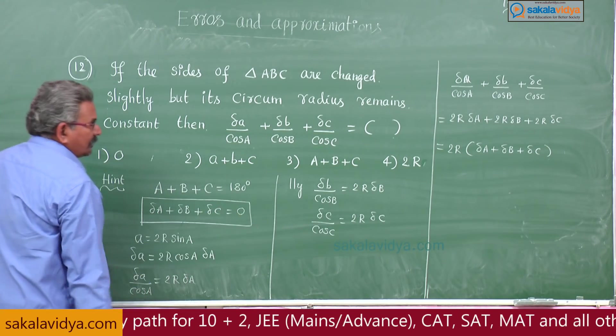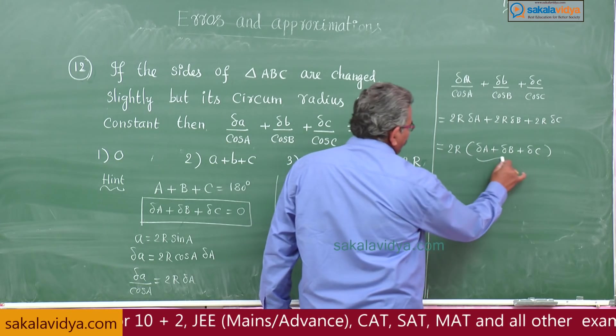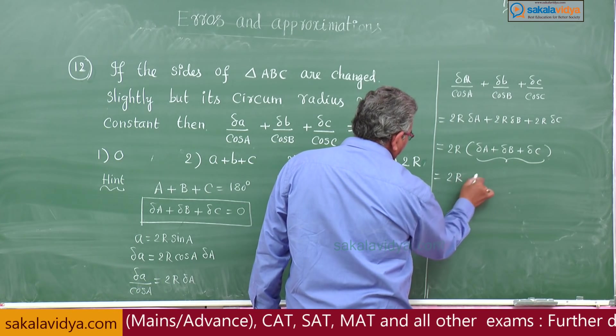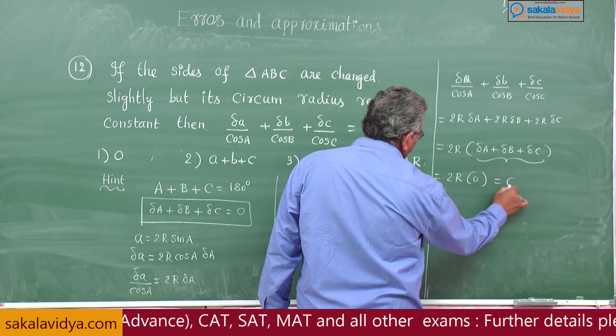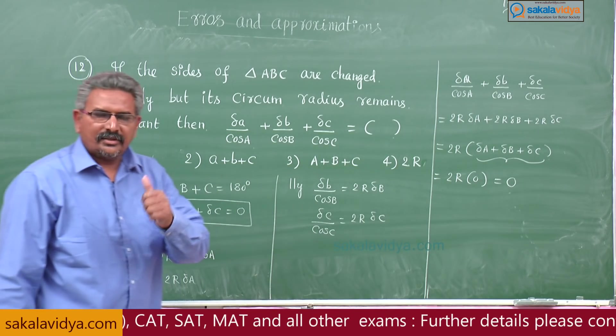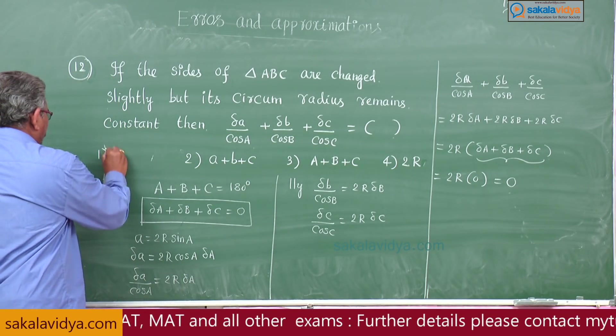This is nothing but 0, so this becomes 0, 2R into 0. What is the right answer? The first option is the right answer.